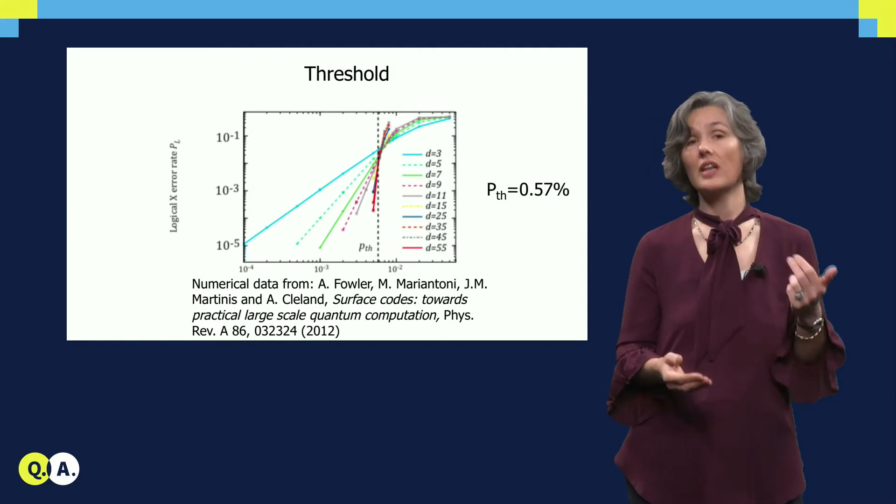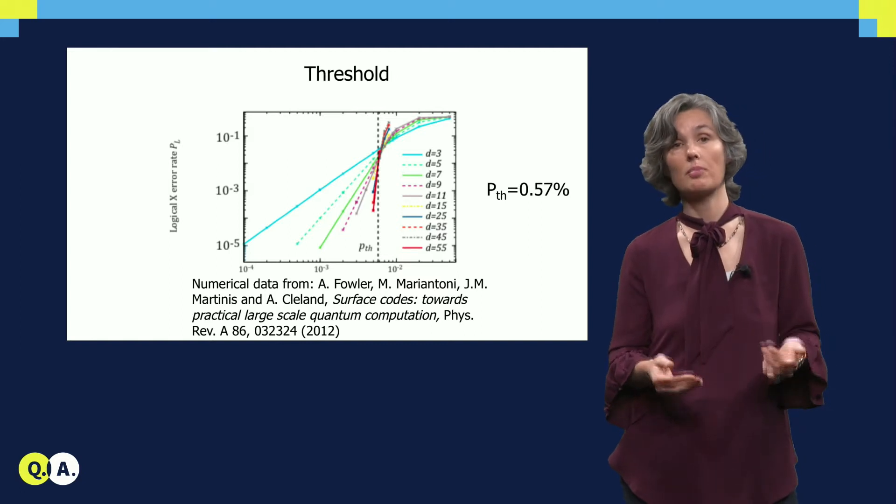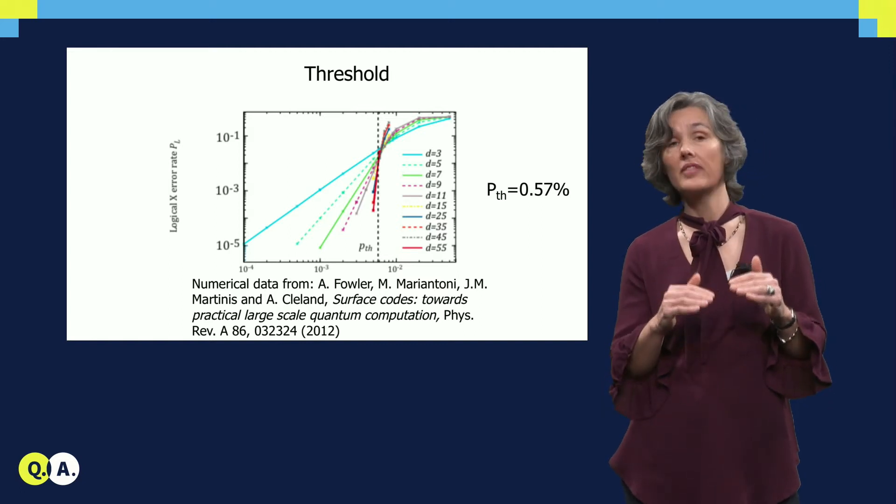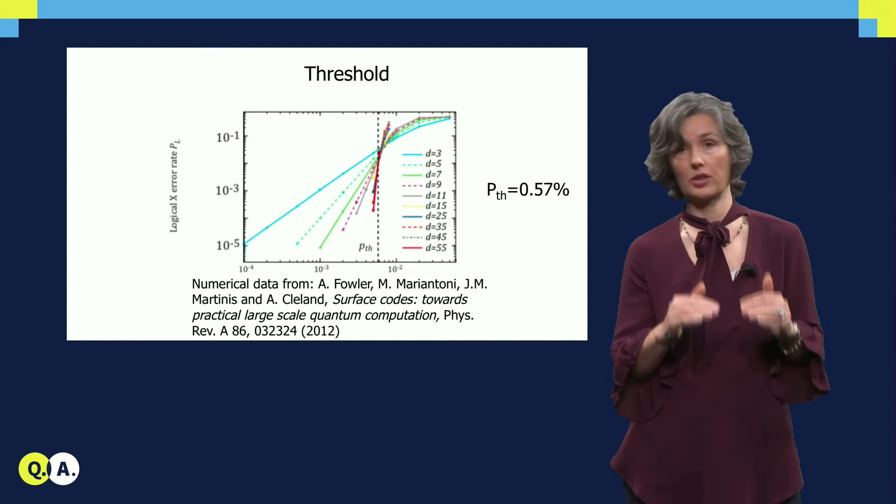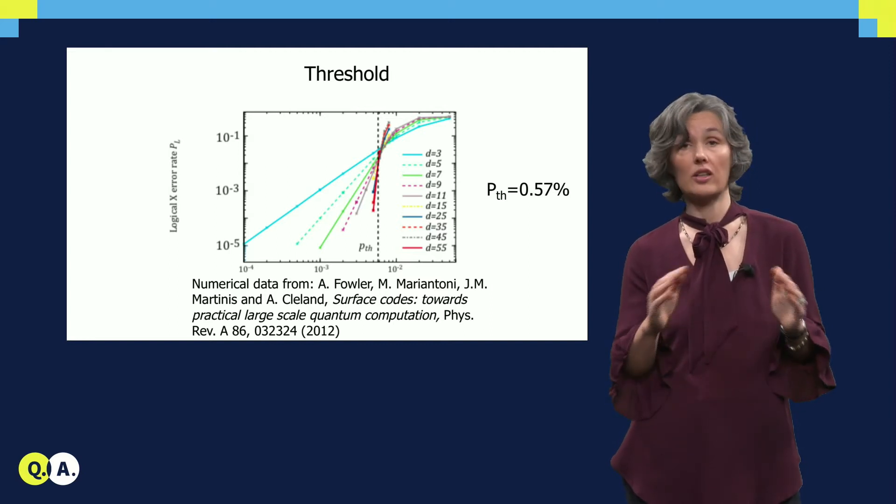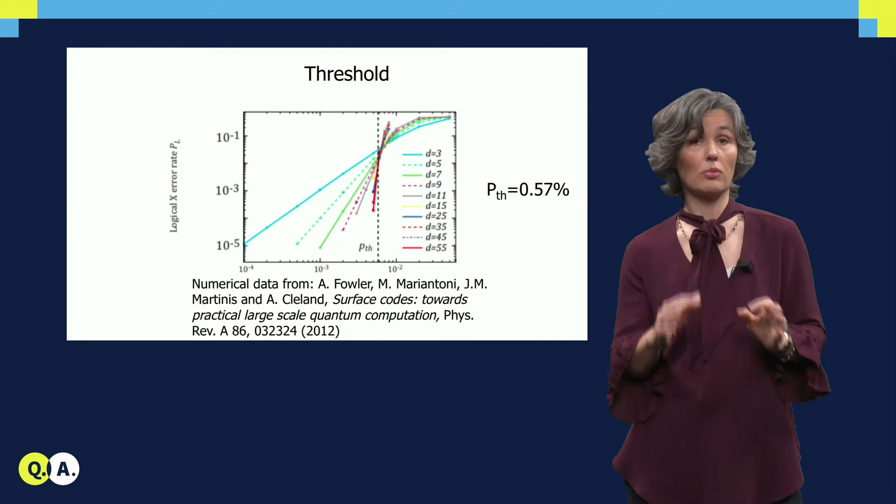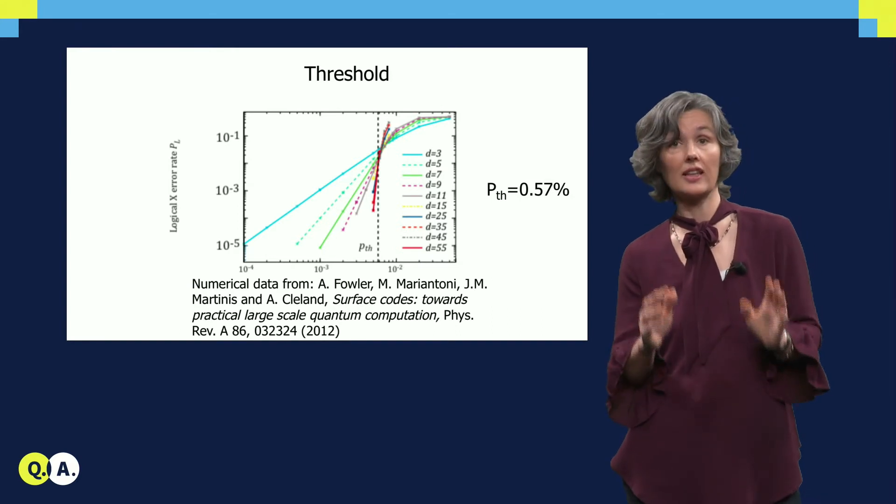However, if the error rate on each gate is above some critical value, then instead error correction becomes worse with larger d. The whole error correction code makes errors more likely rather than less likely.